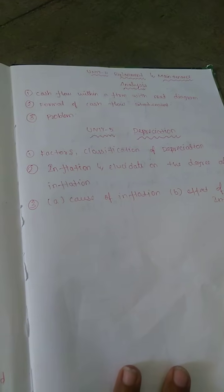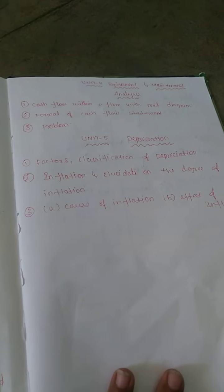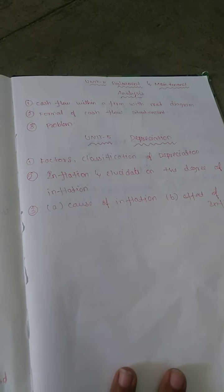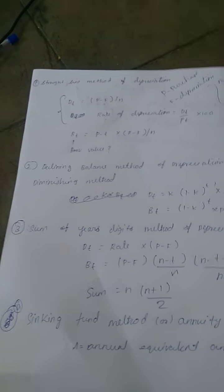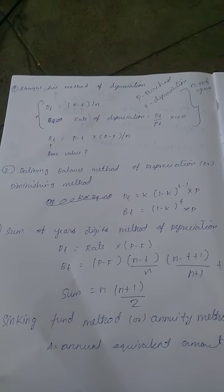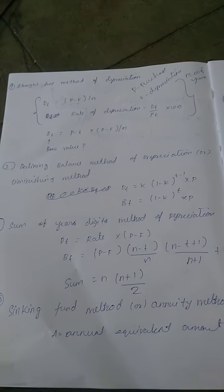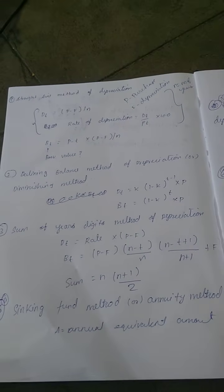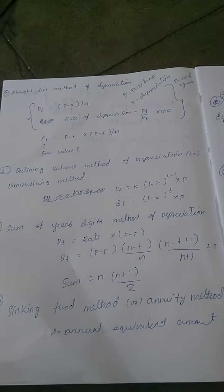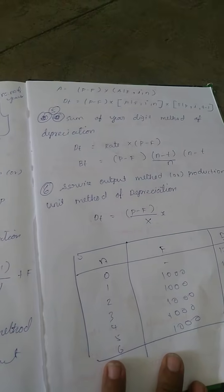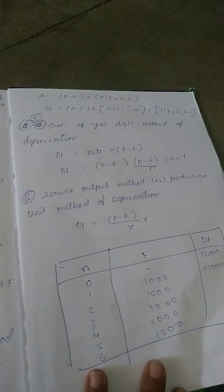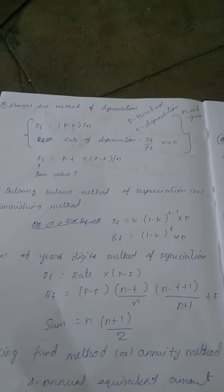The unit name is depreciation. The depreciation methods covered are: straight line method, declining balance method, sum of years digits method, sinking fund method, annuity method, and service output method.